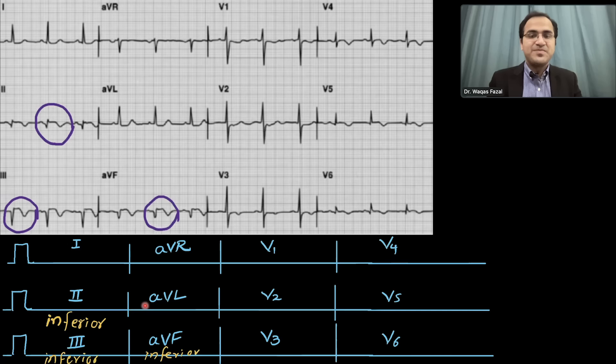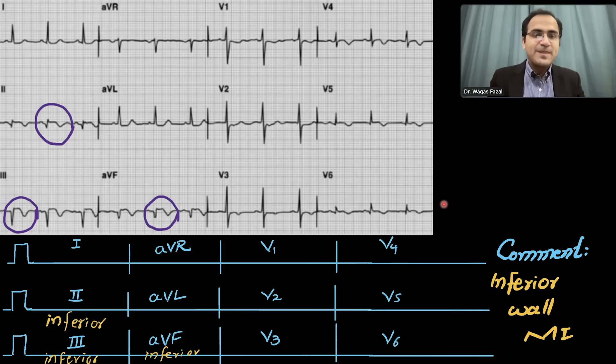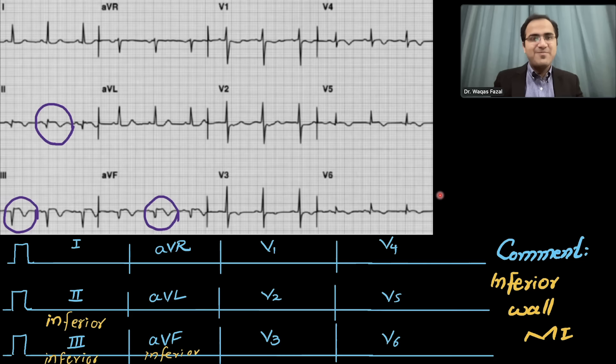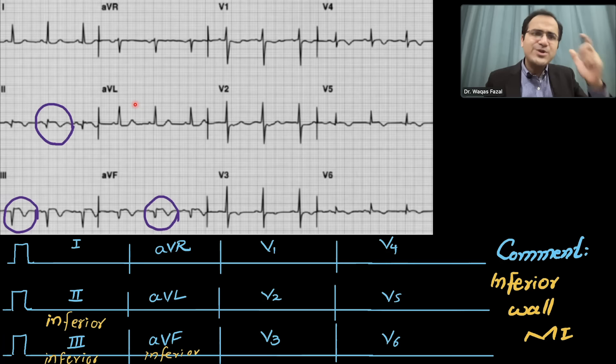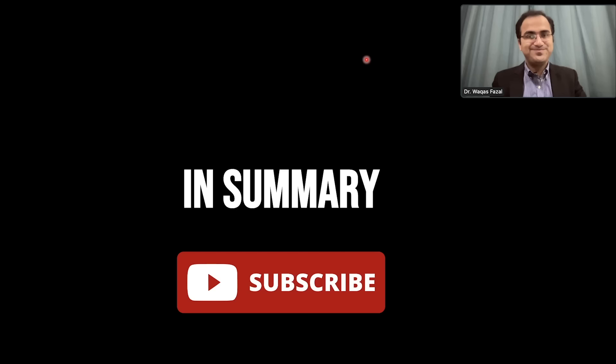In the last ECG, leads II, III, and aVF show ST elevation with pathological Q waves and T wave inversion, indicating inferior wall MI with dead tissue — true infarction. Lead V4 shows T wave inversion. In the next video, subendocardial ischemia, ST segment depression, reciprocal changes, and T wave inversions will be discussed in detail.